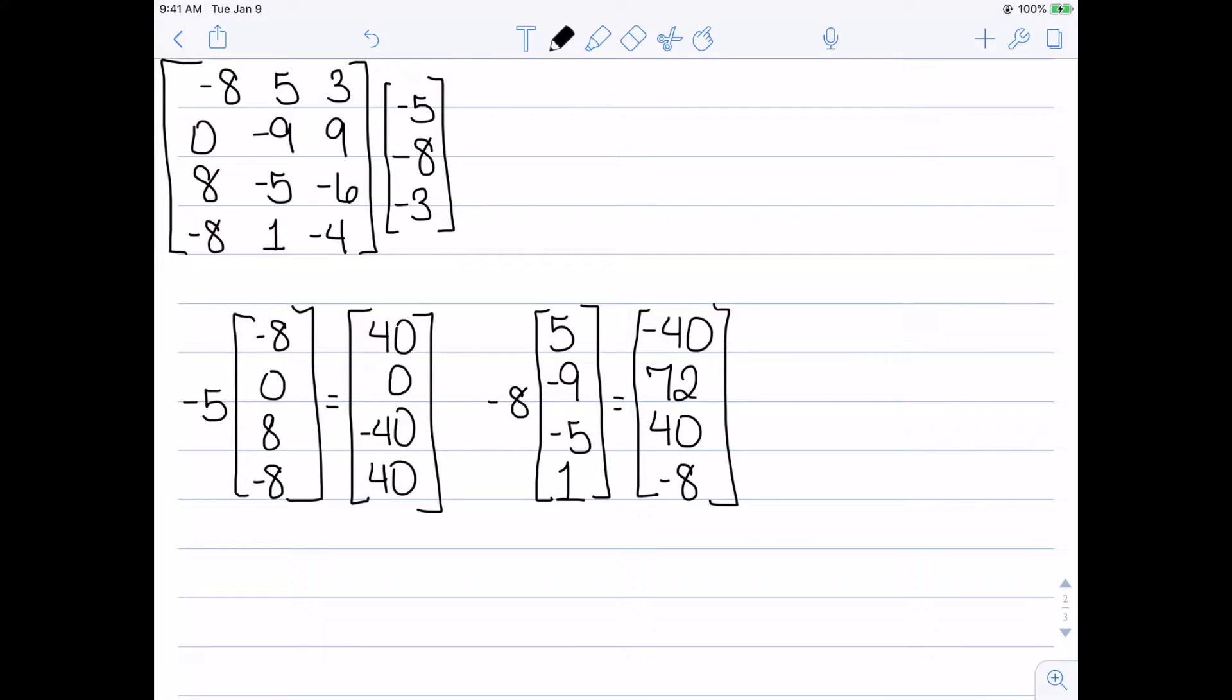Finally, I'm going to do this with the third entry in the third column. Negative three times my third column gives me negative nine, negative 27, 18, 12.